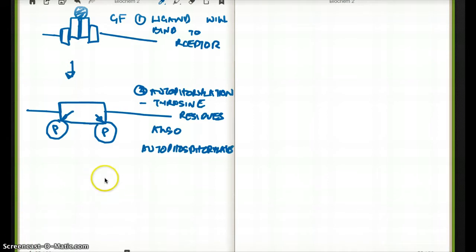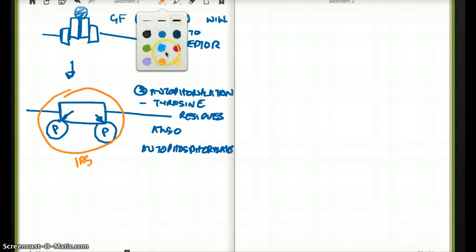Before I move on, I also want to mention here is that when there is autophosphorylation happening at the tyrosine residues, now this particular one is now called IRS, our insulin receptor substrate. It's just a fancy way of saying that the insulin receptor becomes phosphorylated at the tyrosine residues. And now we're going to start calling it IRS, our insulin receptor substrate.